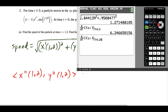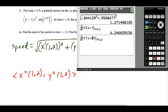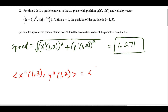We repeat this for the y component: press enter to recopy the line, scroll over, press vars, go to parametric, and this time type in y1, the velocity in the y direction. The derivative of the y velocity gives us the acceleration in y at t equals 1.2. Rounding to three decimal places, the x component of acceleration is 6.247 and the y component is 0.405.